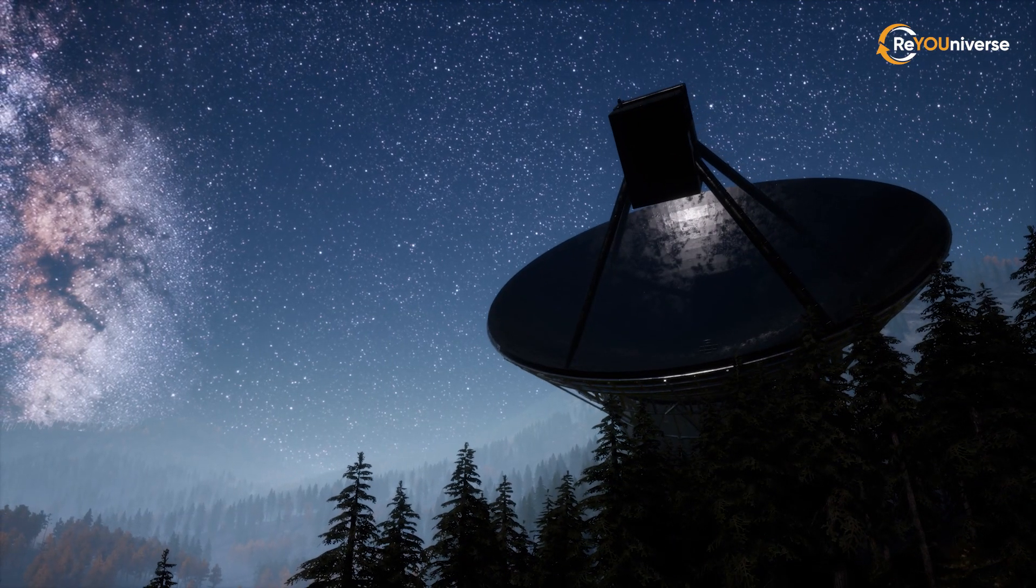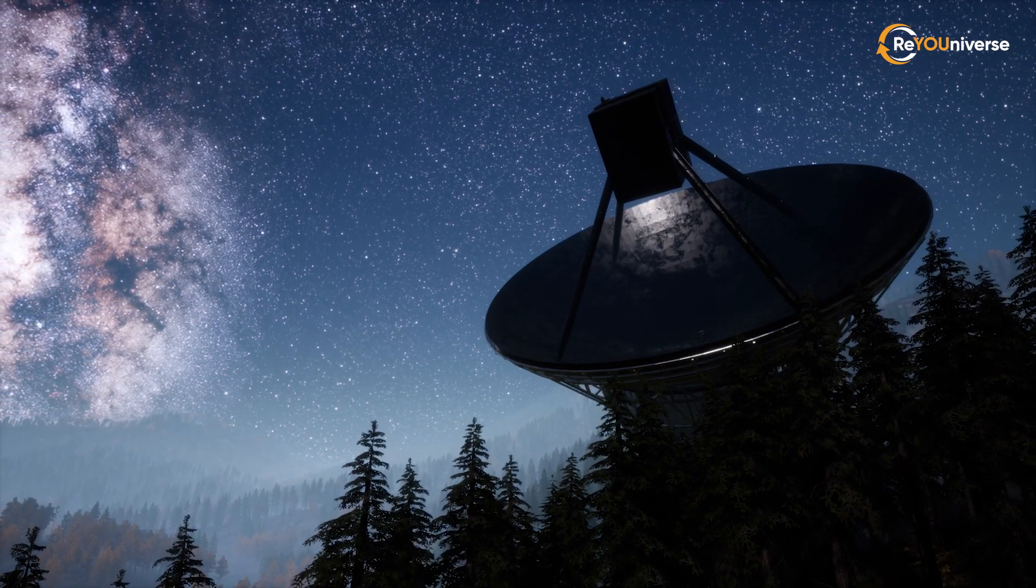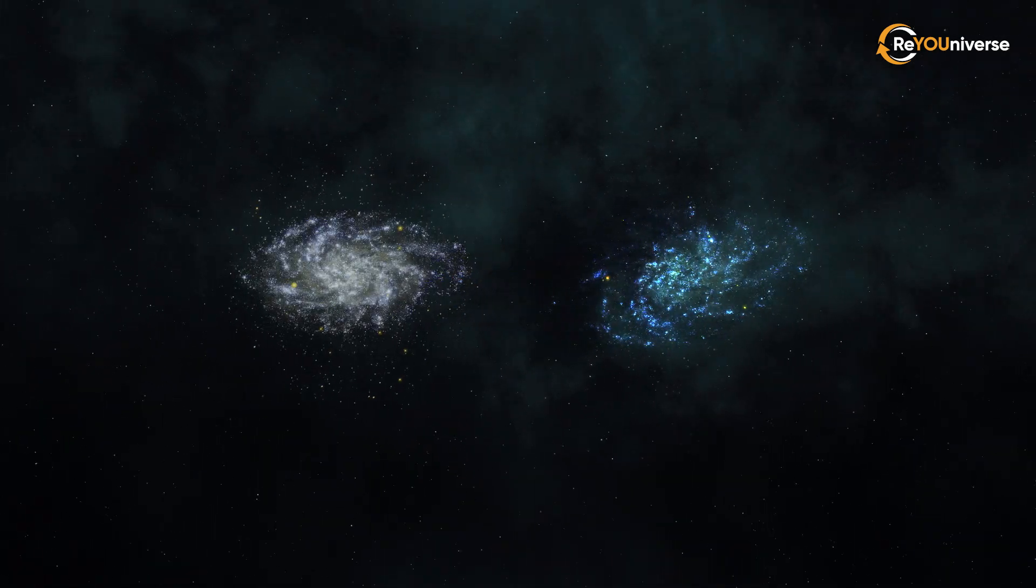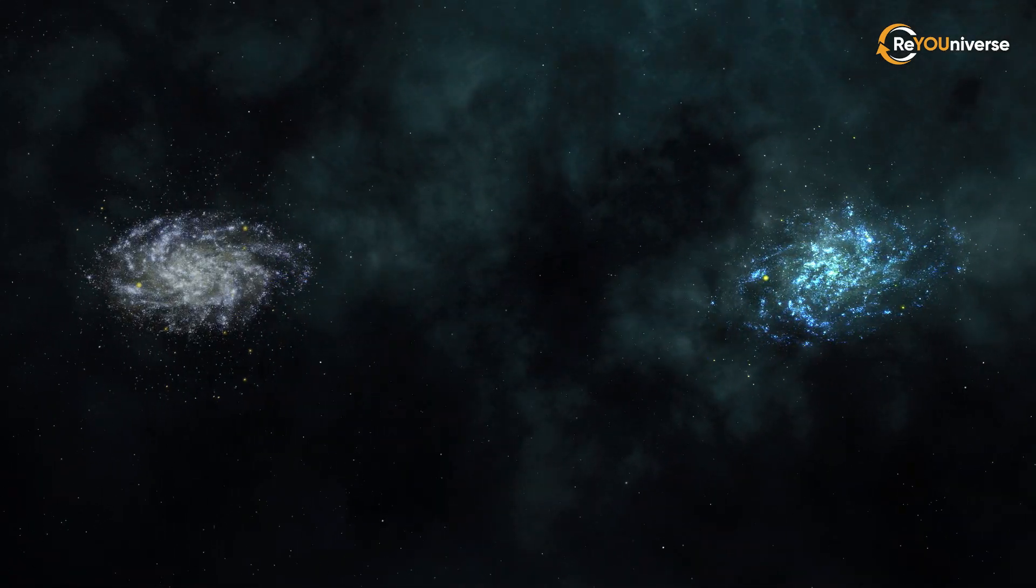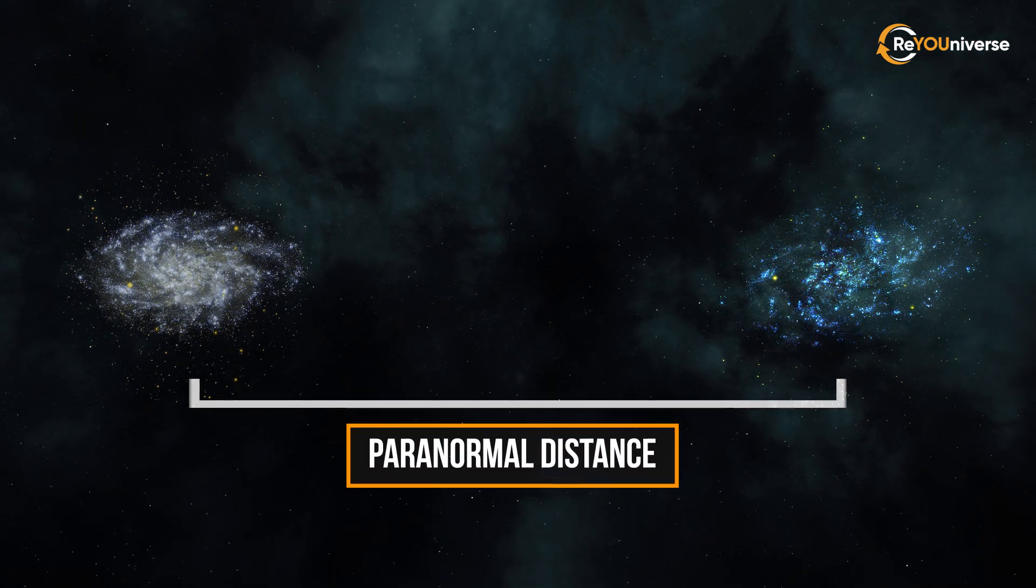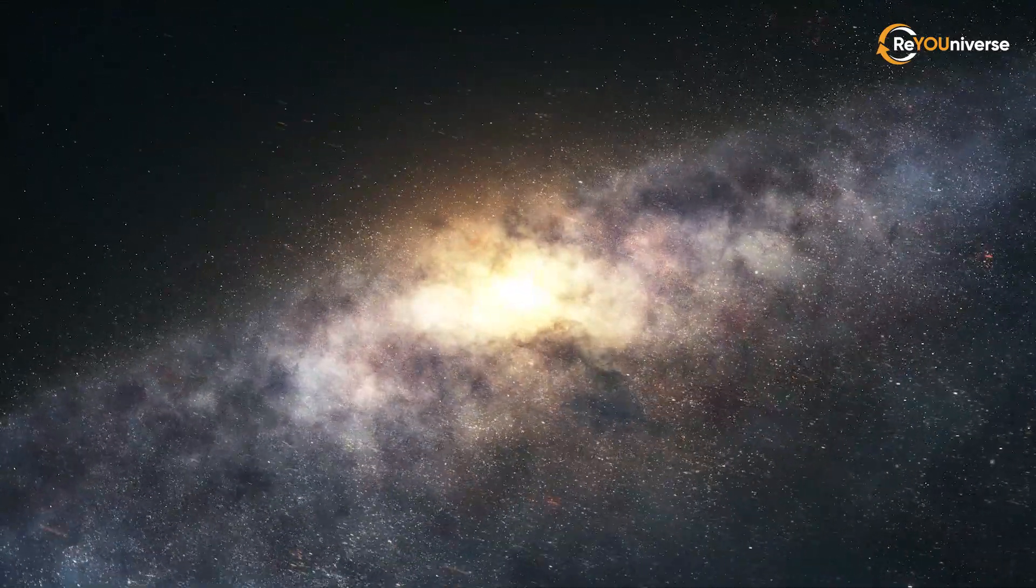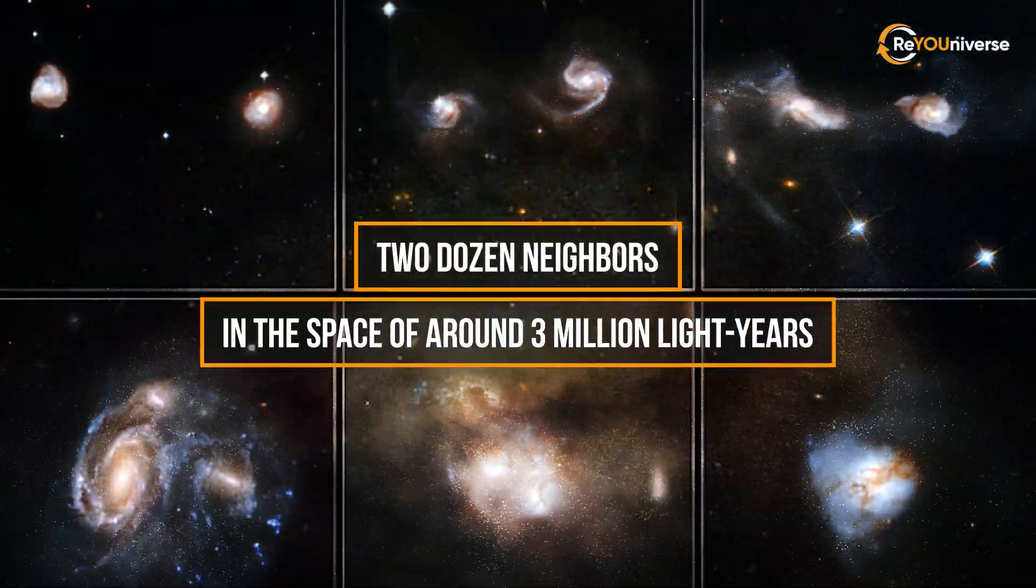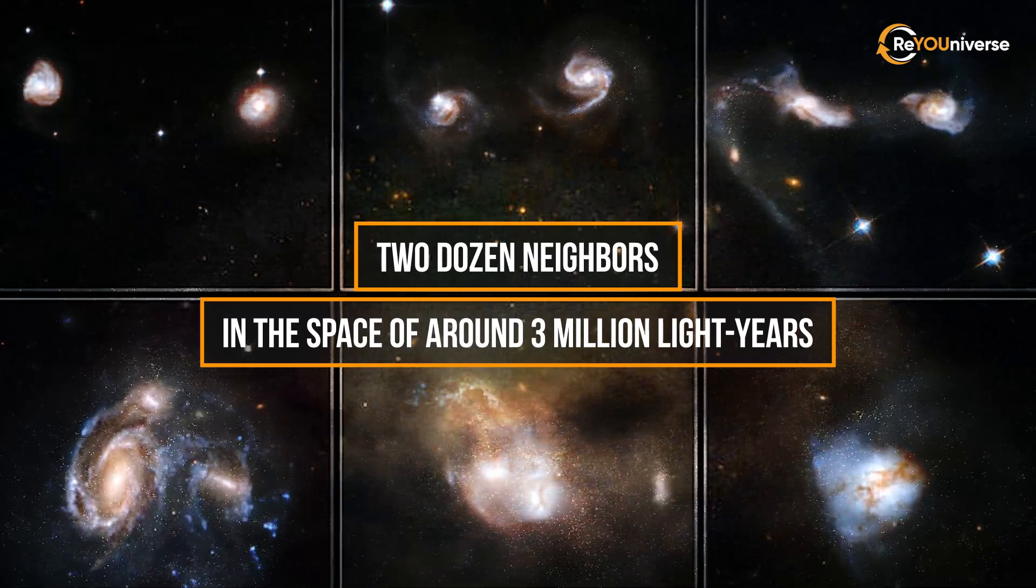Upon discovering this great void, astronomers have noticed how mysterious and unique this area is. When taking into account the distance between the galaxies inside the void, it's clear that it can be called a paranormal area. Just to put this in perspective, our Milky Way galaxy has around two dozen neighbors in the space of around 3 million light-years in the cross-section.